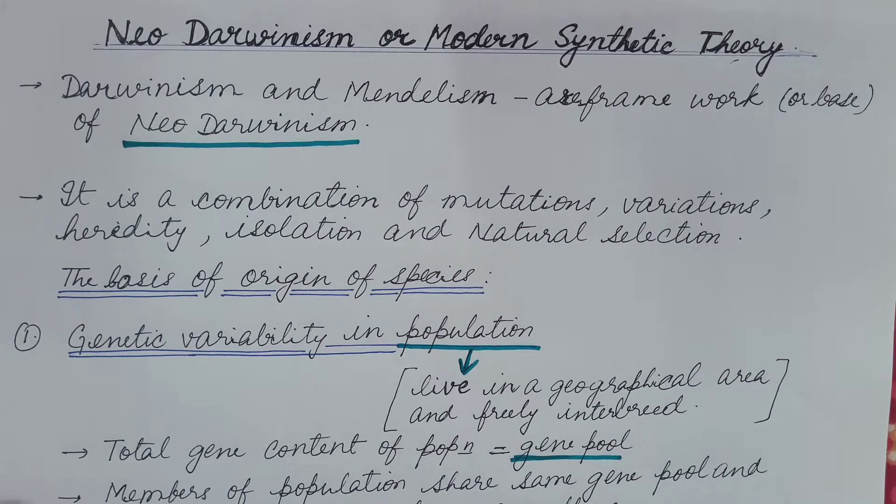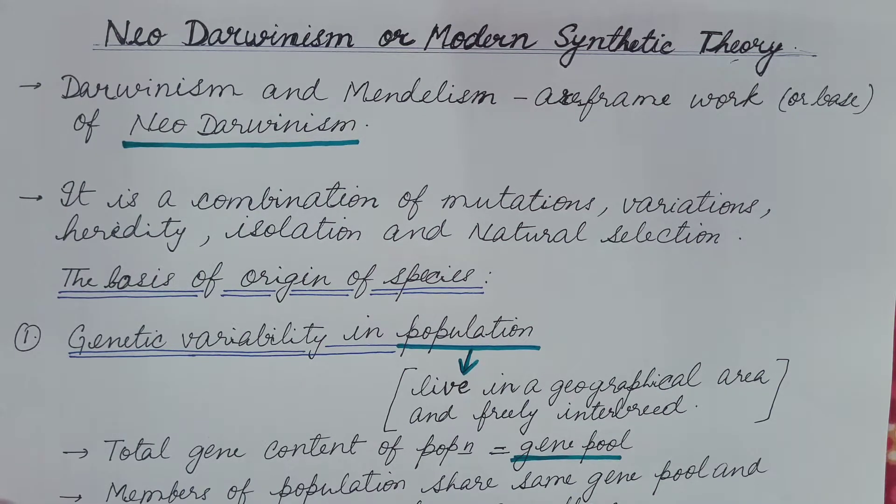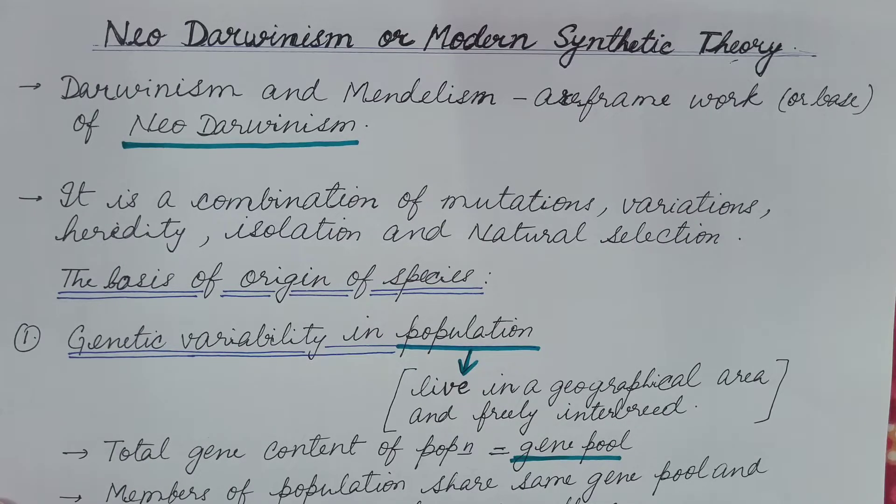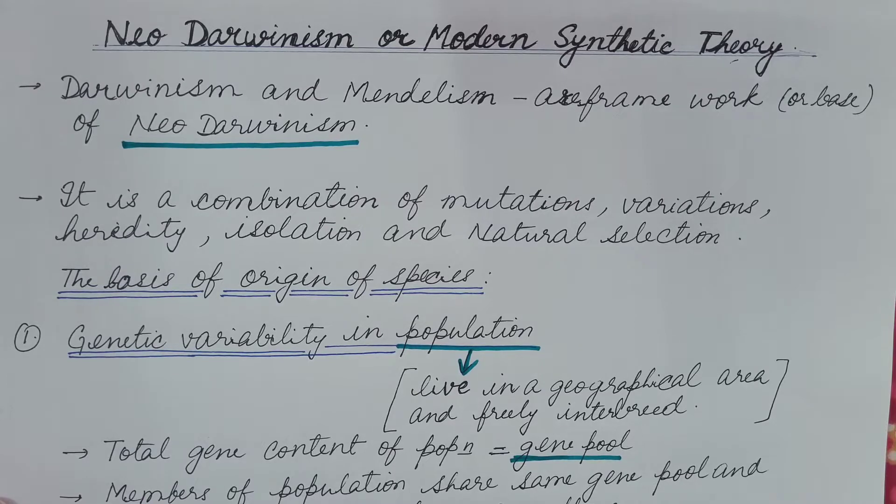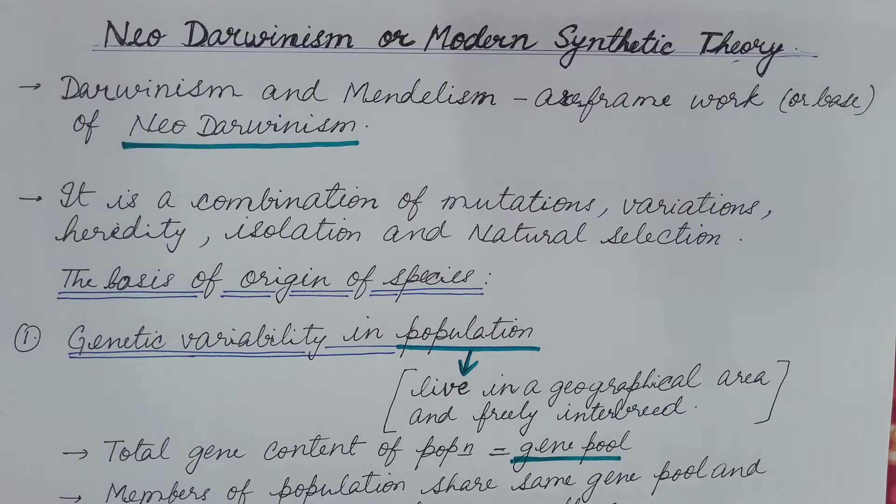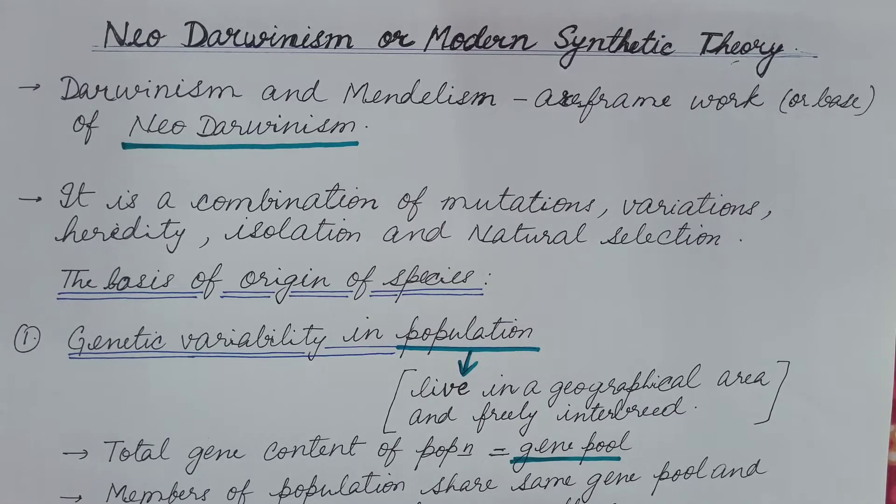Hello friends, in the last video we started learning evolution. We discussed the definition of evolution, then we also learned about the salient features of evolution. We also discussed some theories of evolution. We discussed Lamarckism and its criticism, and also we discussed Darwinism. You can refer to my video, the link is given in the description box.